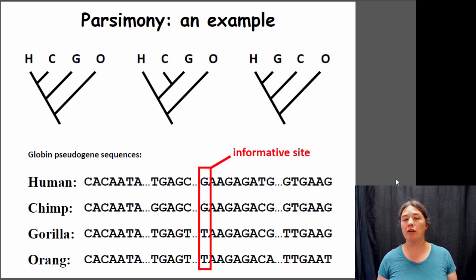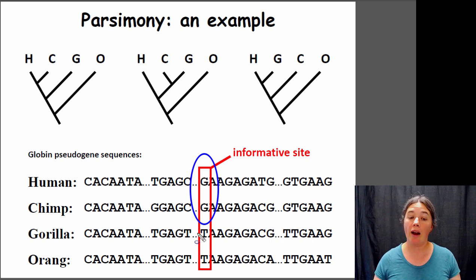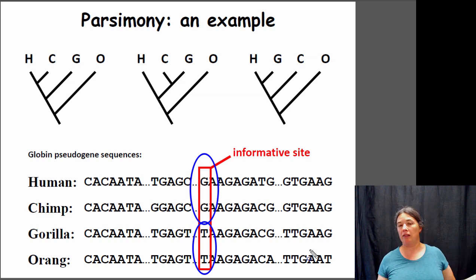Here's a trait that is a shared derived trait. In this scenario, humans and chimps share the G, which is derived because the ancestral trait is the T. Gorillas have a T with the orangutans, and the humans and chimps have a G.